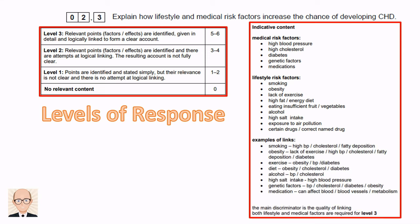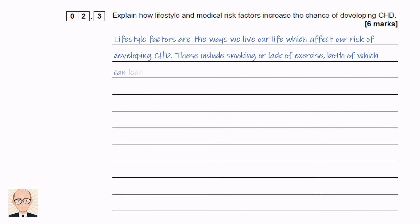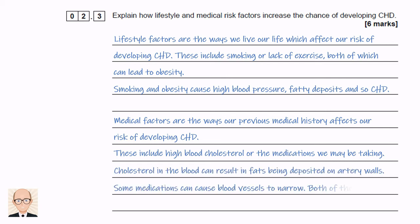We then need to link clearly how the risk factor could lead to coronary heart disease. The response I've written here focuses on just two lifestyle and two medical risk factors. I've started by stating that lifestyle factors are the ways we live our lives, giving examples like smoking and lack of exercise and how these can both cause obesity. I've then stated how obesity can lead to high blood pressure, fatty deposits, and therefore coronary heart disease. I've then described medical factors as being how our medical history affects our risk, giving the examples of high cholesterol and medications, linking high cholesterol to fatty deposits and stating how some medications can cause blood vessels to become narrow.